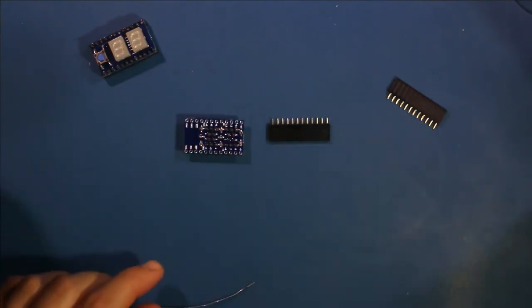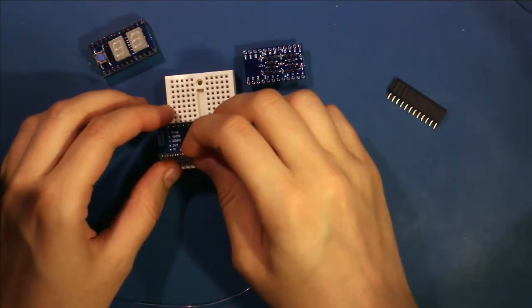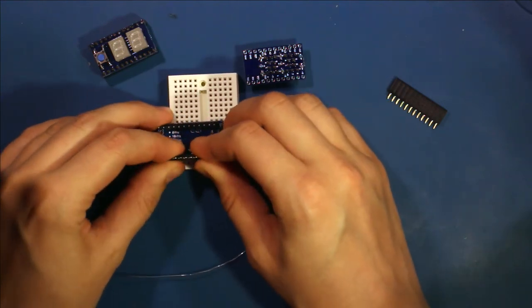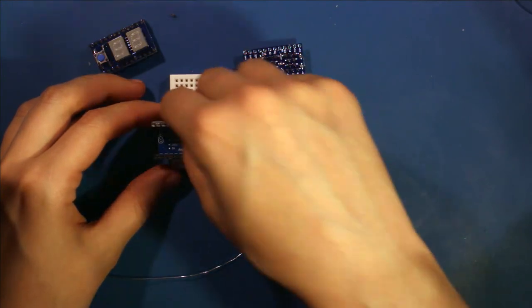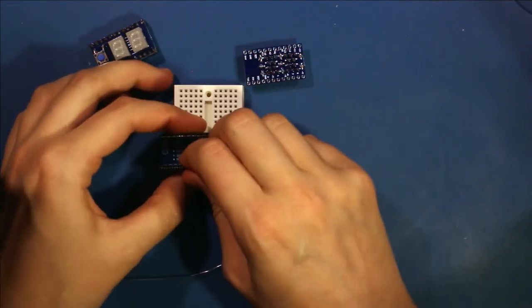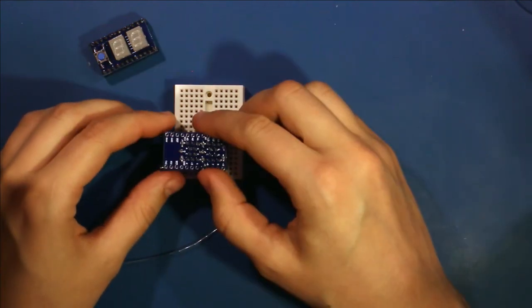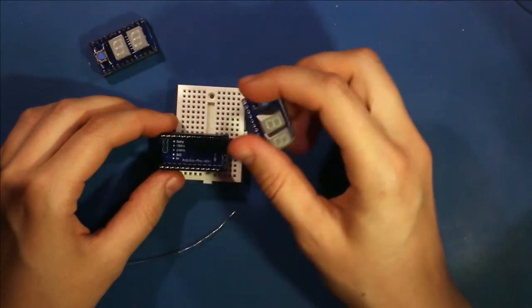And then the last thing we need to do is put on these female headers. The easiest way to do that is to take a pro mini or something that already has the pin out that you want so that the spacing and alignment is correct and just plug them directly on to those pin headers and then slide this on top.